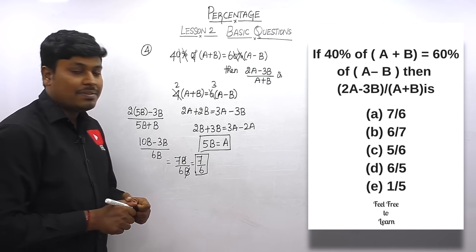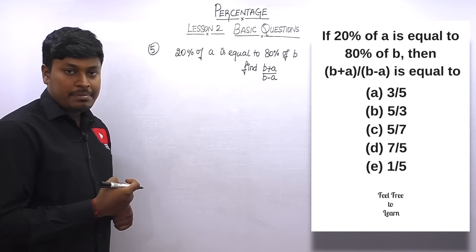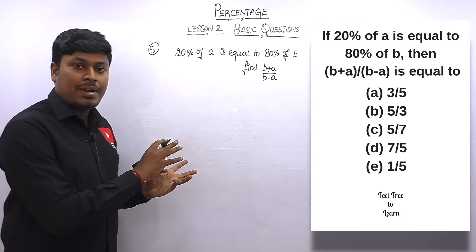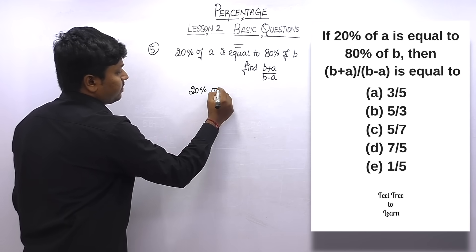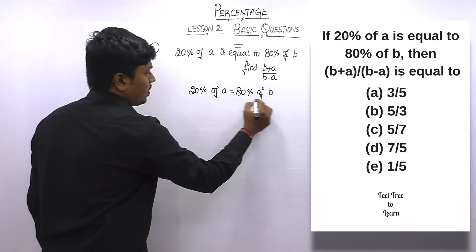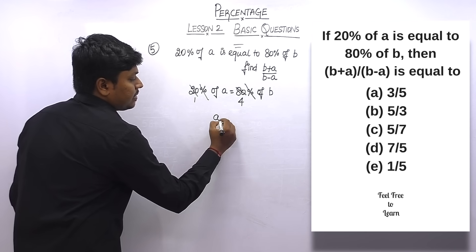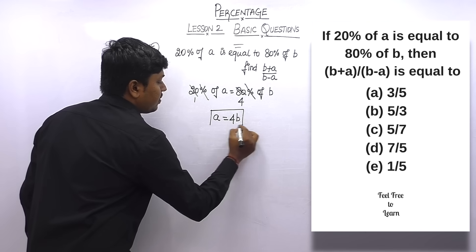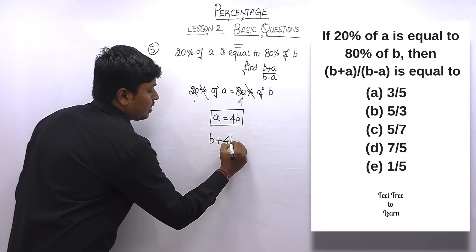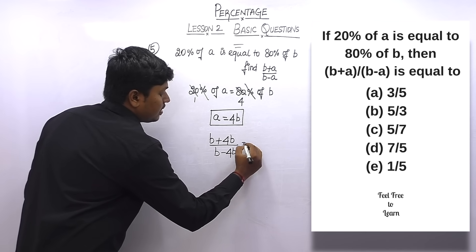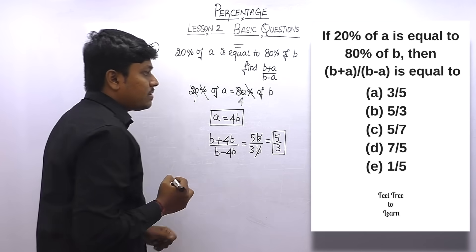Question number five: if 20% of a = 80% of b, find (b + a)/(b − a). Cancelling: a = 4b. Substituting: (b + 4b)/(b − 4b) = 5b/(−3b) = 5/3. The answer for question 5 is 5/3.